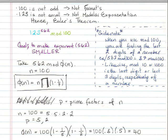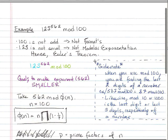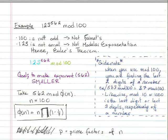Alright, so one more example. We have 123 to the power 562 mod 100. 100 is not odd. I should say not prime. It's not odd either, but 100 is not prime.